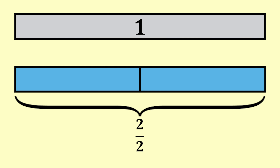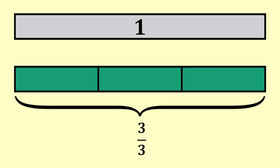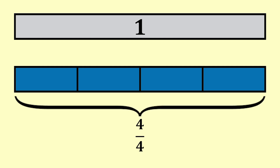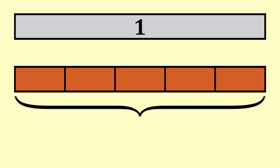Two out of two is two halves, which is one whole or one. Three out of three is three thirds, which is one whole or one. Four out of four is four quarters or four fourths, which is one whole or one. Five out of five is five fifths or one whole or one.